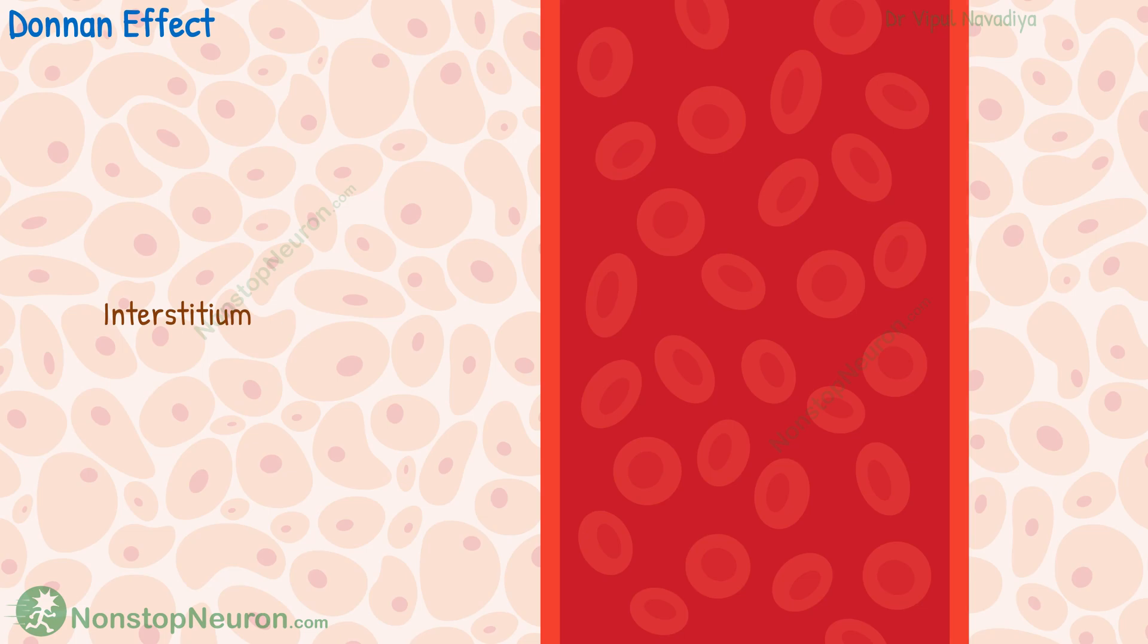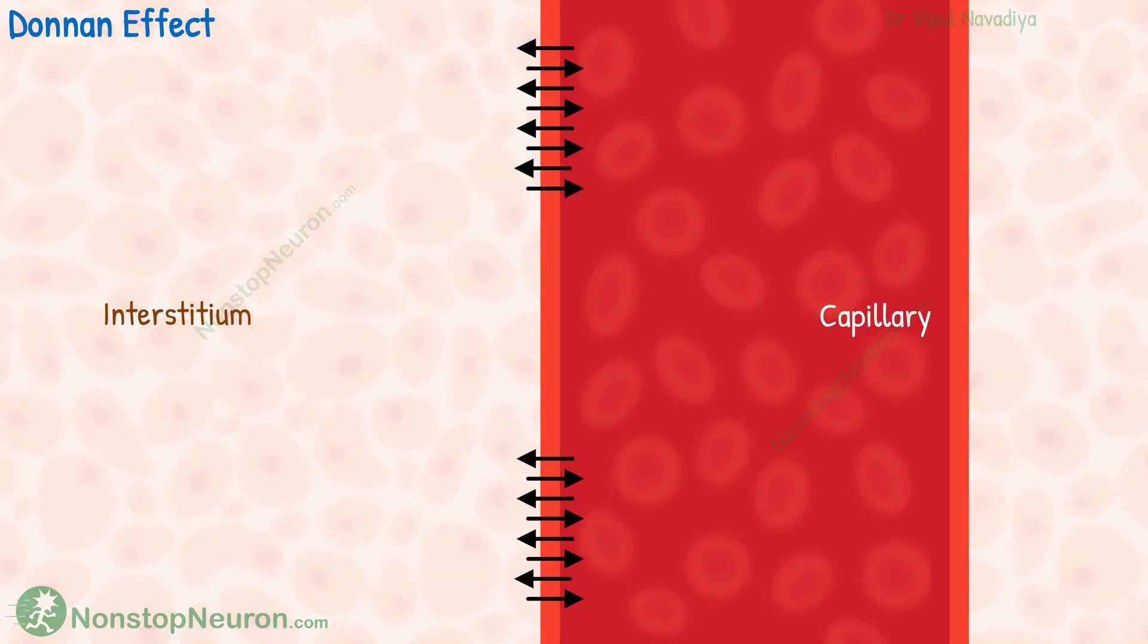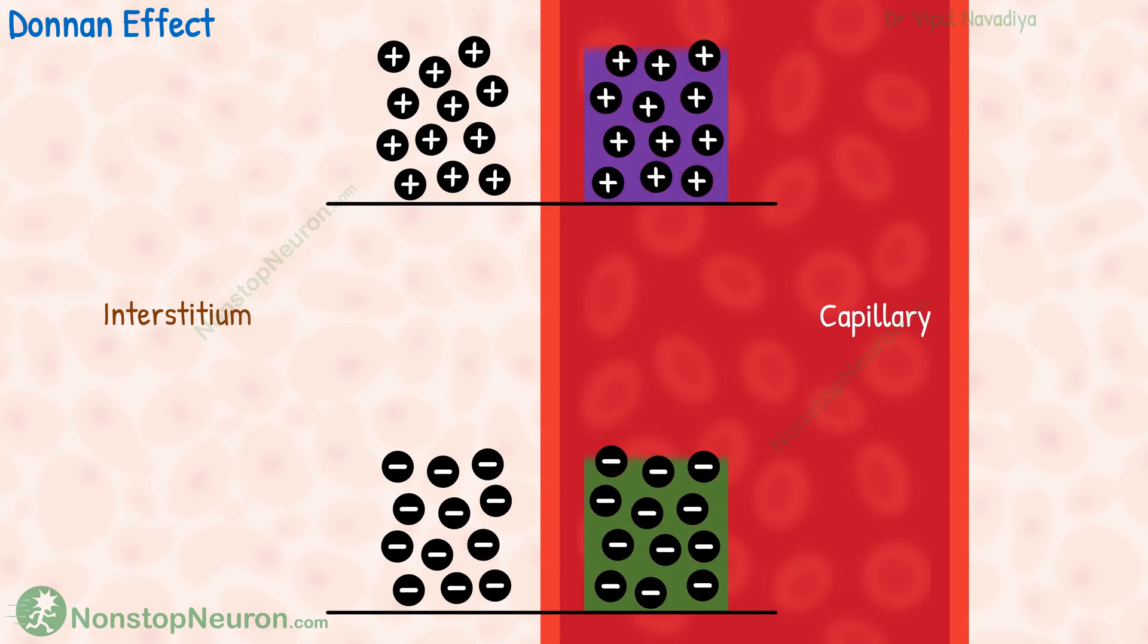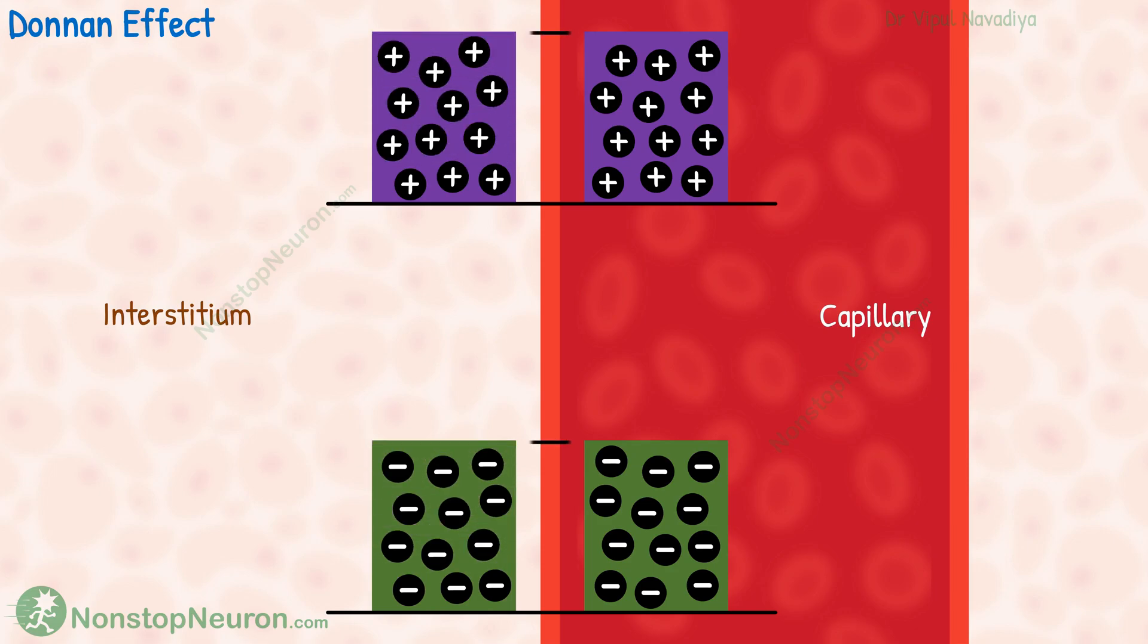This is interstitium. And this is capillary. Now in the video on filtration across the capillary wall, we saw that capillary wall is highly permeable to small solutes like sodium, chloride, etc. So their concentration in plasma and interstitium is the same.